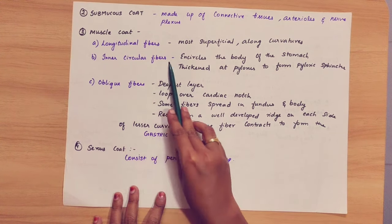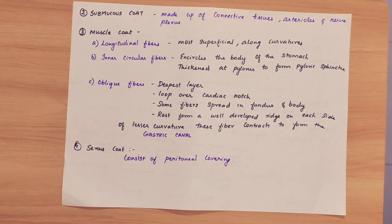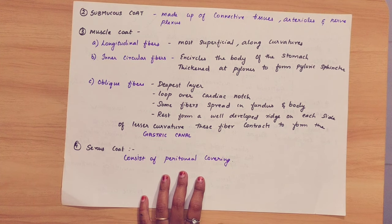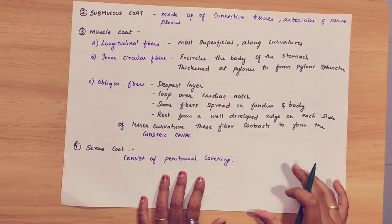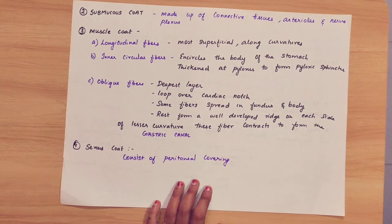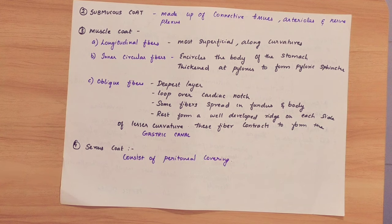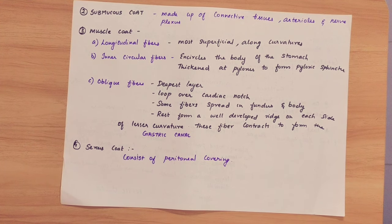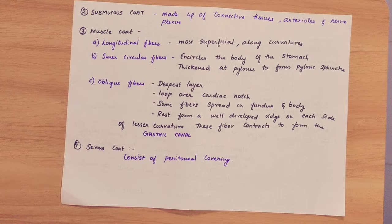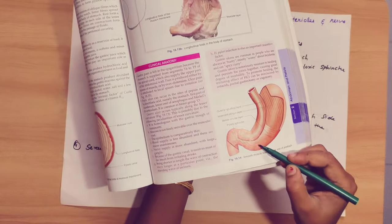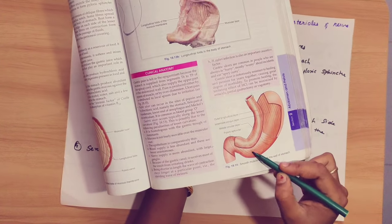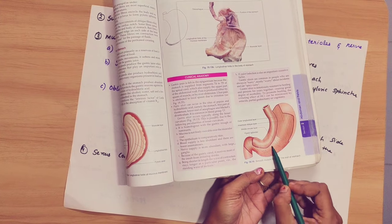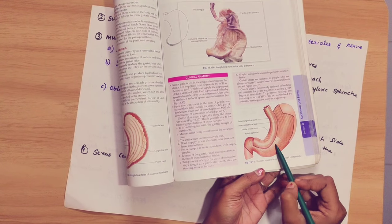Next, the inner circular fiber encircles the body of the stomach — the fundus, body, and pyloric region. It is thickened at the pylorus to form the pyloric sphincter. So in the pylorus area, the circular fiber is very thick, and that area we are calling the pyloric sphincter. This is the middle circular coat.